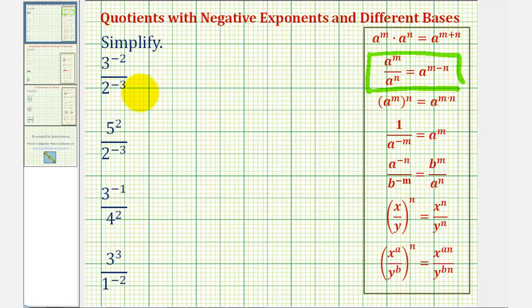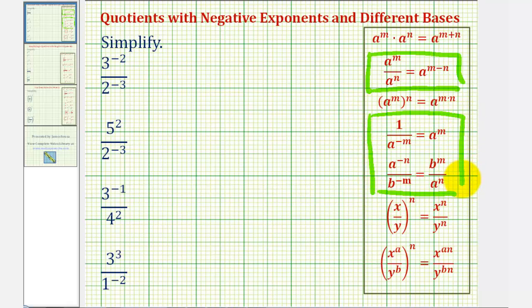The quotients are not going to be considered simplified if they contain negative exponents, which means we'll be applying these two rules to simplify these quotients, where one divided by a to the power of negative m equals a to the power of positive m. One way to think of this rule is if we write a to the power of m in fraction form, we can put this over one, and so by moving this exponential across the fraction bar, or in this case up to the numerator, it changes the sign of the exponent.